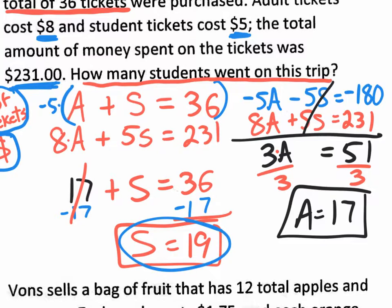On the test, all you put is 19, because that's what's being asked for. But maybe on the test I don't ask for students — I ask for parents or adult tickets. Then it would be 17. You have to pay attention carefully to what I'm asking for on each word problem.